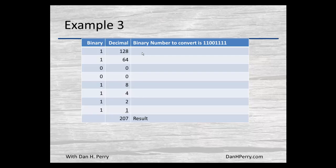A third example. Here one in the 128 as well as the 64 bit position. There are zeros in the 32 and 16 bit. There are ones in the next four: the eight, four, two, and one. So we write those down, add the results to give ourselves a 207.